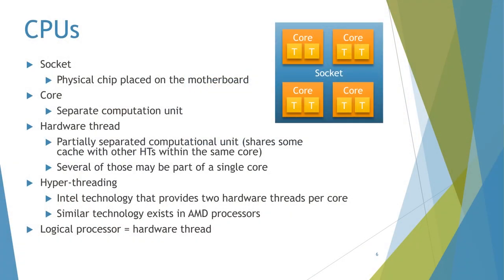Here's a brief overview of what's going on at the hardware level. We have today the idea of a socket which has a set of cores. Each core is sometimes split into two hyper-threaded threads, which is an Intel technology that also exists on AMD processors. You have several logical threads within the same core — they're not completely independent; they share some state, especially some levels of caching.